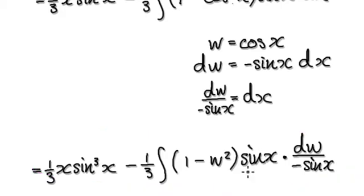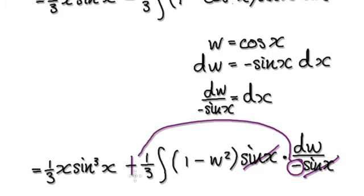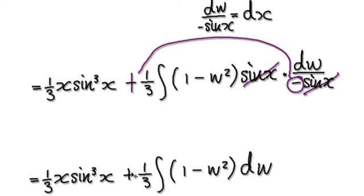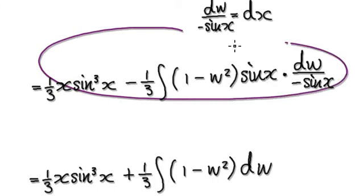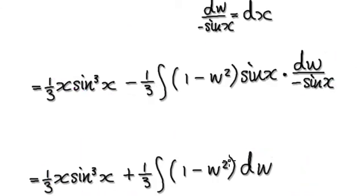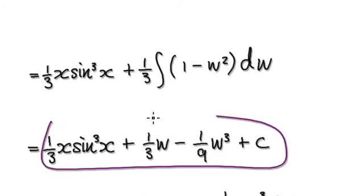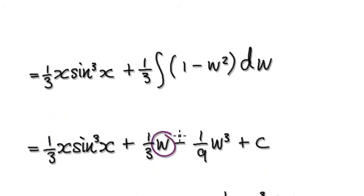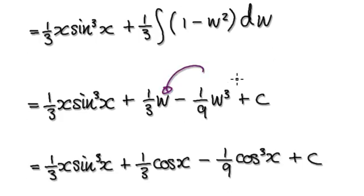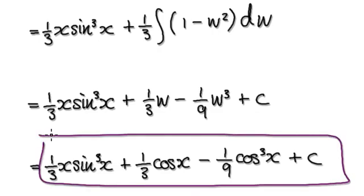This will cancel out with this — factor out the minus one so that will then become a plus. This is easy to integrate; it's really the sum of two parts. Integrating it will then give you this, and then earlier we said let w be cos of x, so we can put cos of x back in for w. This is your final answer.